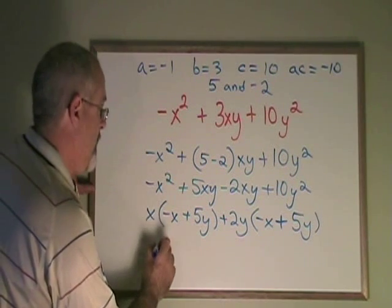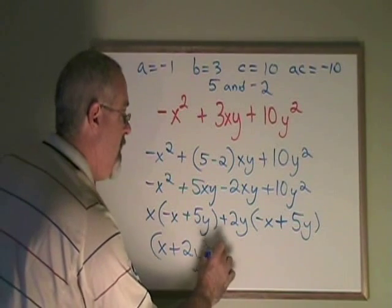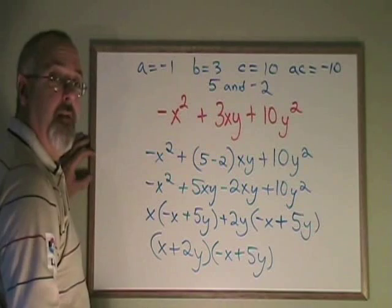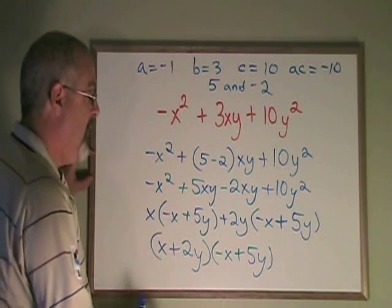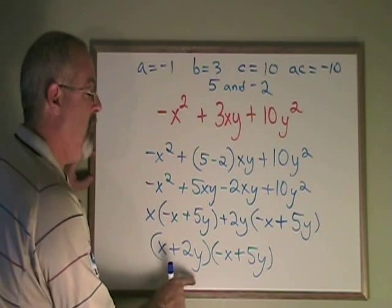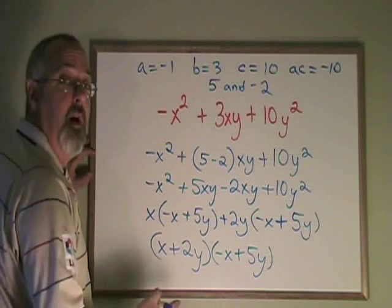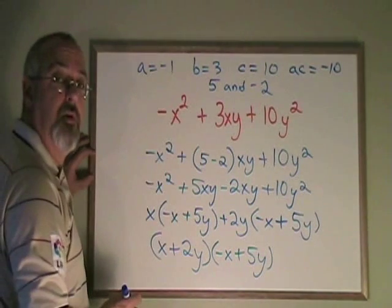I can rewrite this as x plus 2y, negative x plus 5y. And if I factor a negative 1 out of this second binomial, I will end up with x plus 2y, x minus 5y, and the negative 1, which is the same answer I had when I factored this using the simple trinomial method.